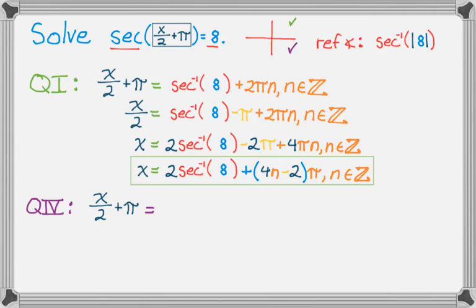So I'm just going to go with negative secant inverse of 8, and then plus 2πn, like that. I'm going to subtract π from both sides, but I'm going to kind of think about it while I do it, so I get this.